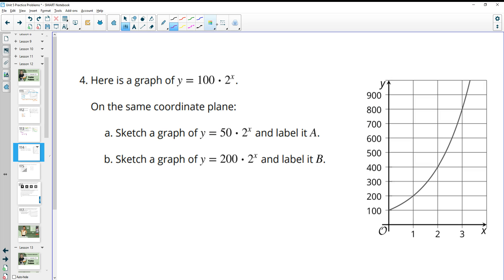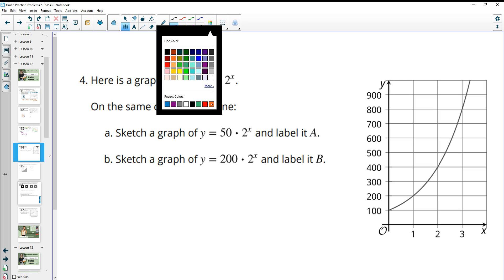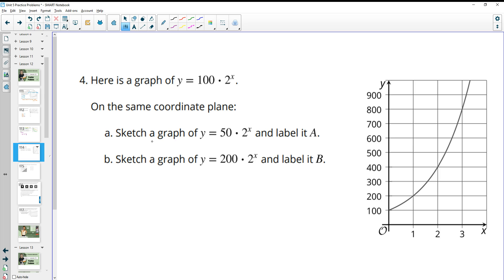Number four gives us the graph of 100 times 2 to the x. It says on the same coordinate plane, sketch a graph of each of these. So let's sketch a graph of this one. Notice the similarities and differences between the one that's graphed and the one that we're graphing. The difference is that this one's going to start at 50 instead of 100.